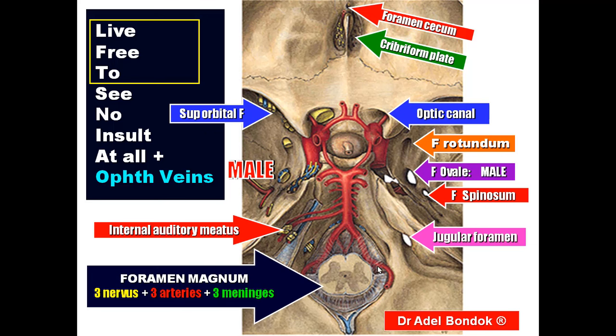Foramen magnum transmits three nervous structures, three arteries, and three meningeal layers. The three nervous structures are: the medulla oblongata continuing as the spinal cord, the spinal accessory nerve entering the cranial cavity, and cervical branches from the upper four cervical nerves supplying the dura of the posterior cranial fossa. The three arteries are the vertebral arteries, the anterior spinal artery, and the posterior spinal arteries. The three meninges — dura, arachnoid, and pia — also pass through.